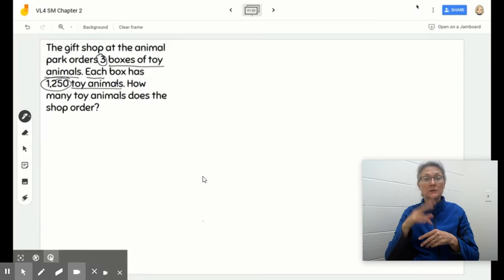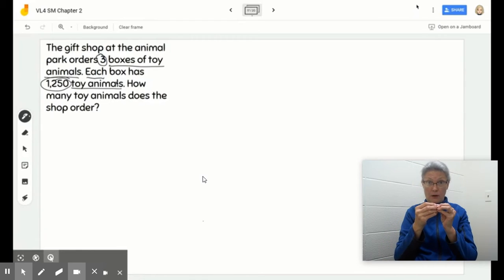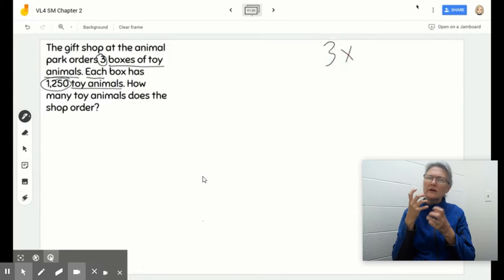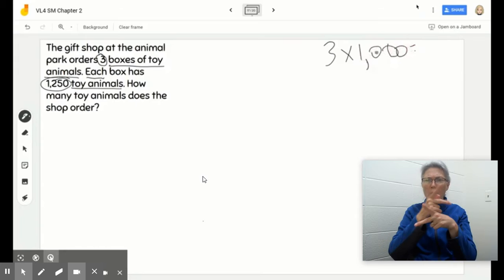And when I look at the number 1,250, that number, if I would like to round it to the nearest thousands, I know that 1,250 is closer to 1,000 than it is to 2,000. So, if I'm just looking to find out an estimation, I can multiply 3 times 1,000. That would give me a product of 3,000.